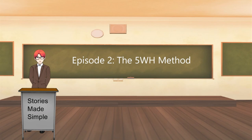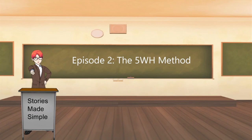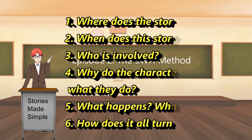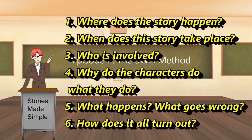So, what details do you need to include in a story to make it work? Well, the simplest way to add detail to a story and start to make it interesting is by using the 5WH method, which is a method writers have been using for a long time when they plan their stories, and you can too. How does it work? That's the best part — you already know it. You just need a little help remembering. To use the 5WH method, you just need to answer the following questions: 1. Where does the story happen? 2. When does this story take place? 3. Who's involved? 4. Why do the characters do what they do? 5. What happens — what goes wrong, or right for that matter? 6. How does it all turn out?